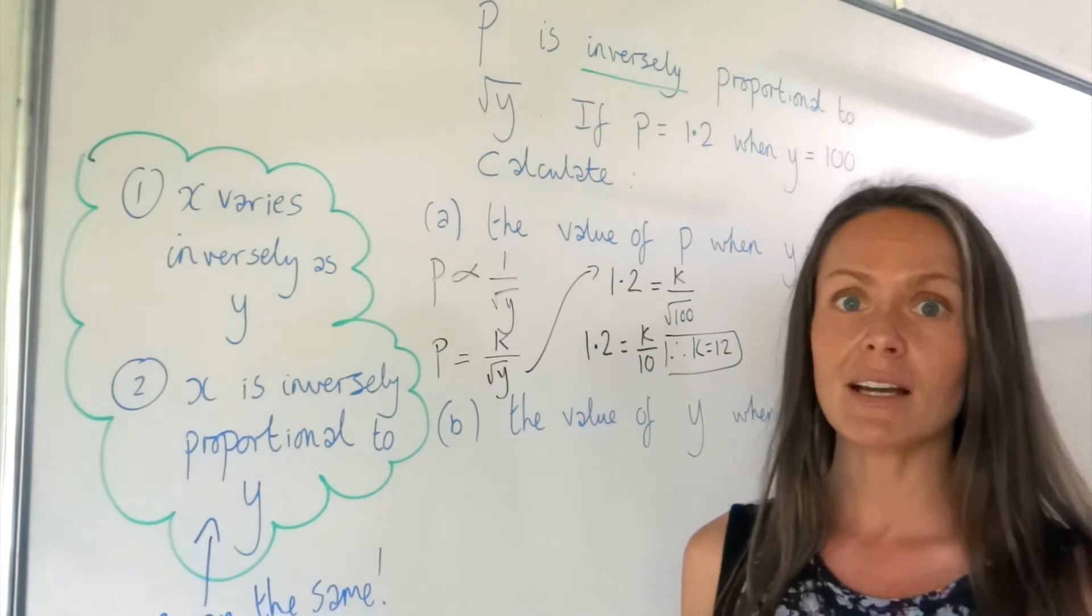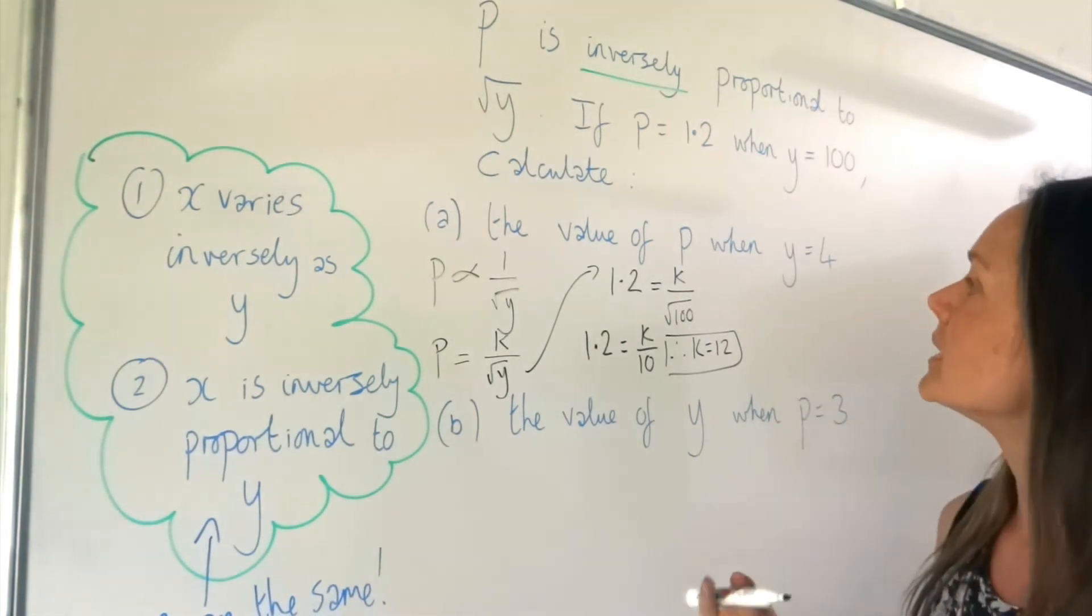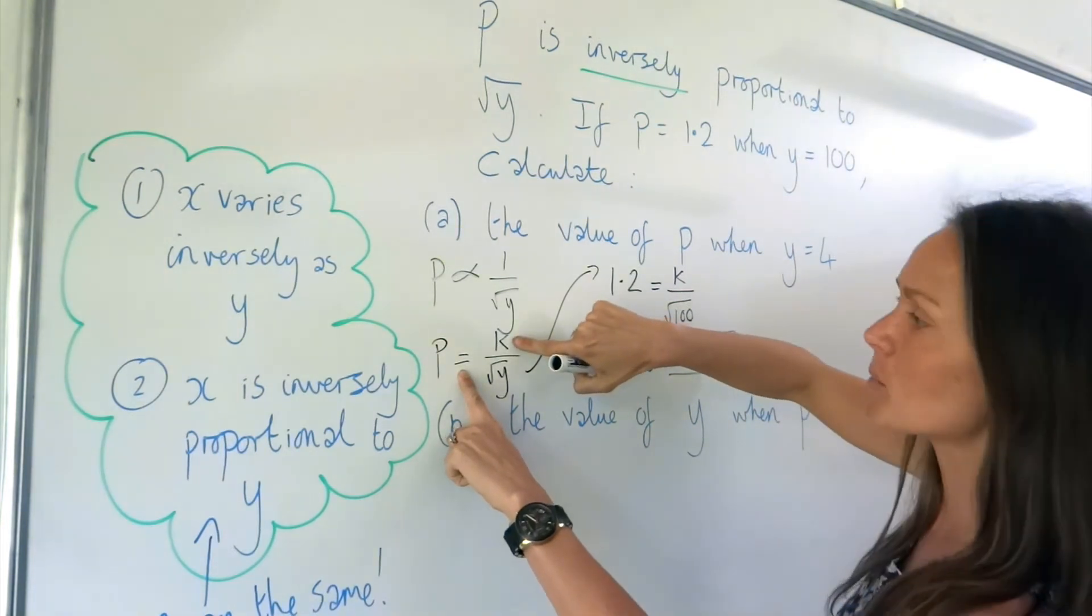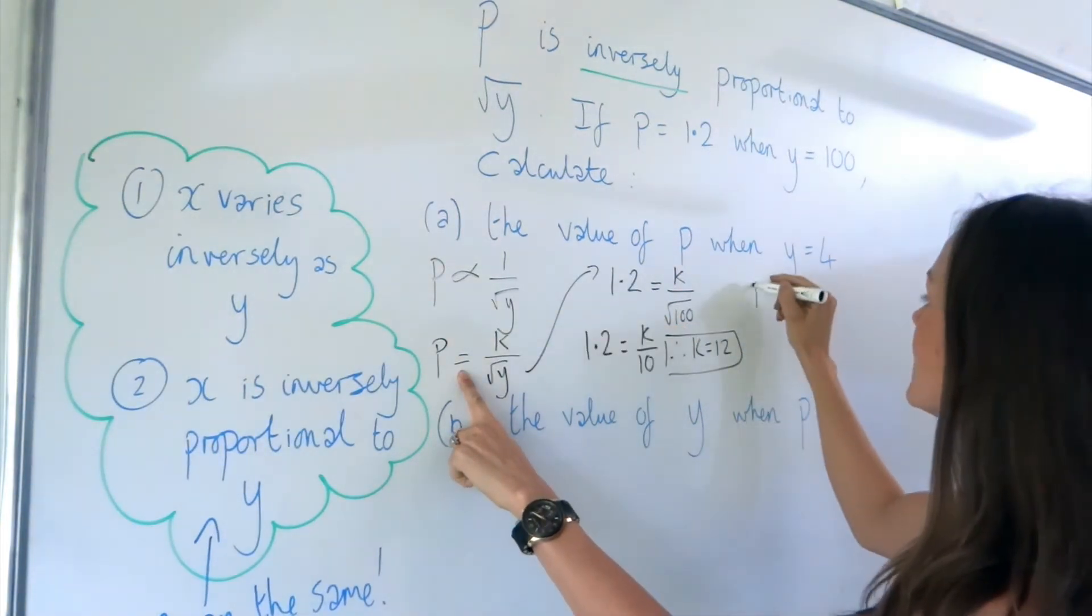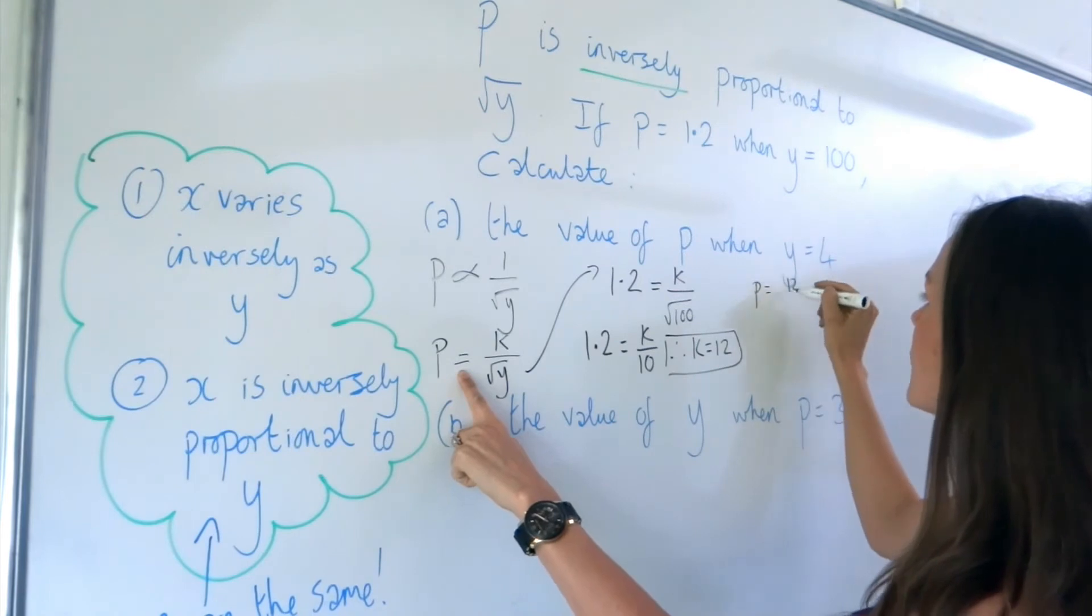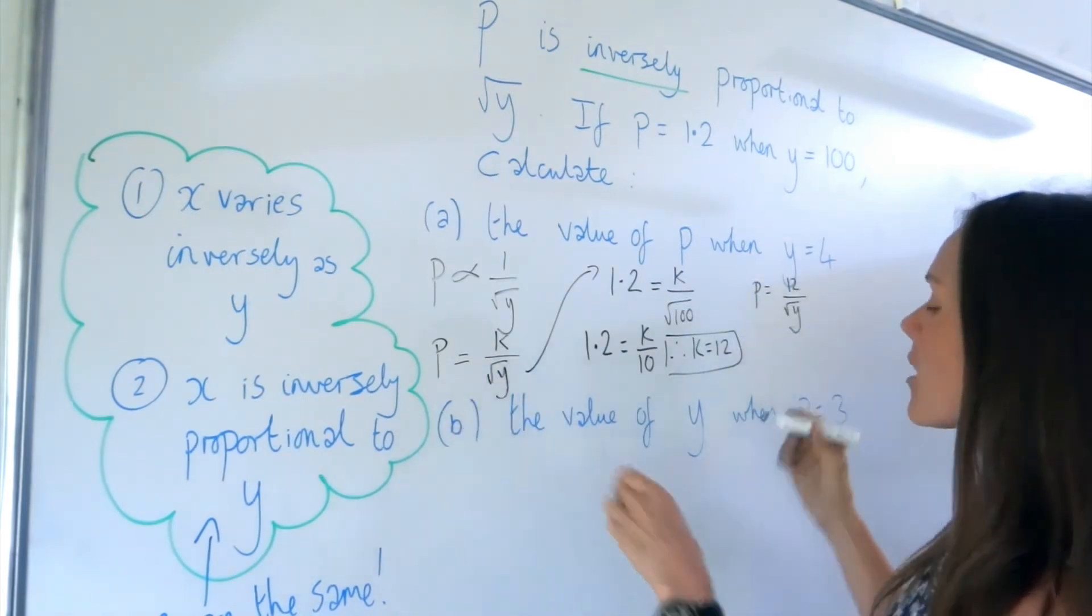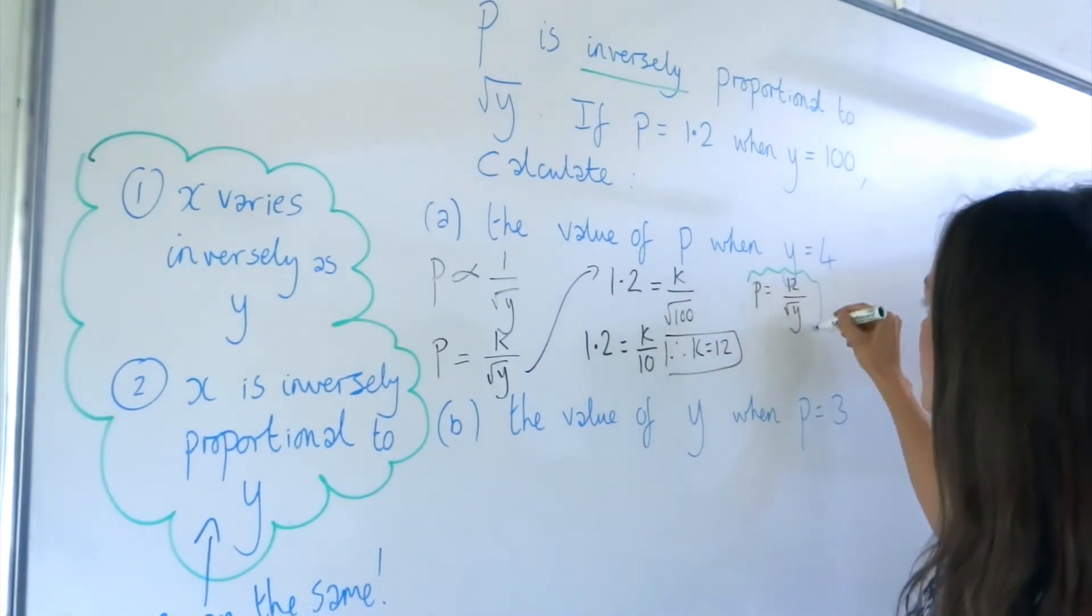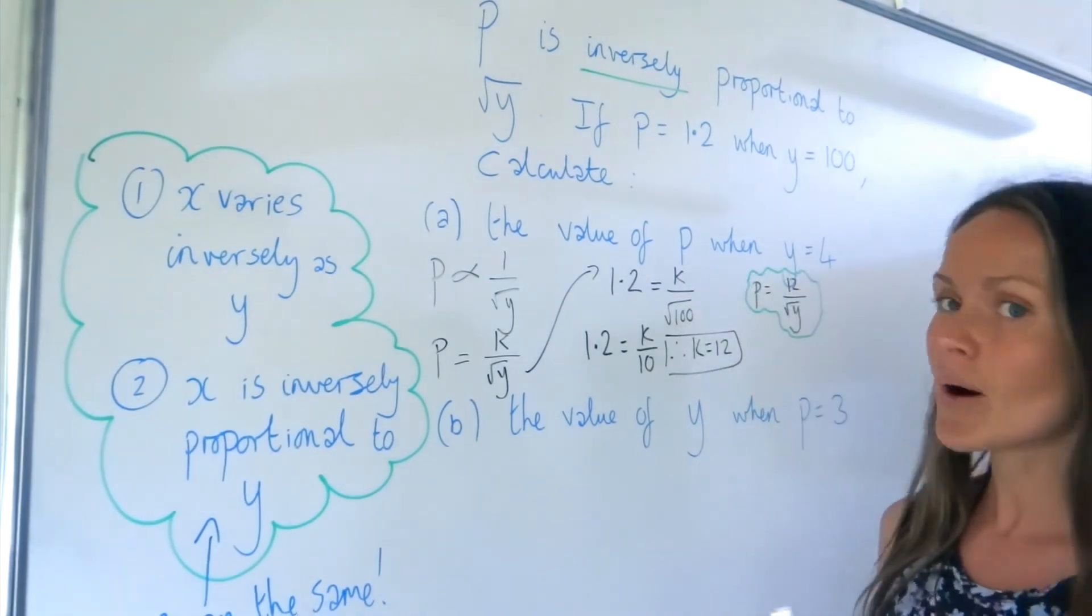So now we can write down the full equation, connecting P and Y. So here's the equation here, but now we know the value of K, so we can substitute that in. So P is equal to 12 over the square root of Y. So we're going to use that equation throughout our question to answer parts A and B.